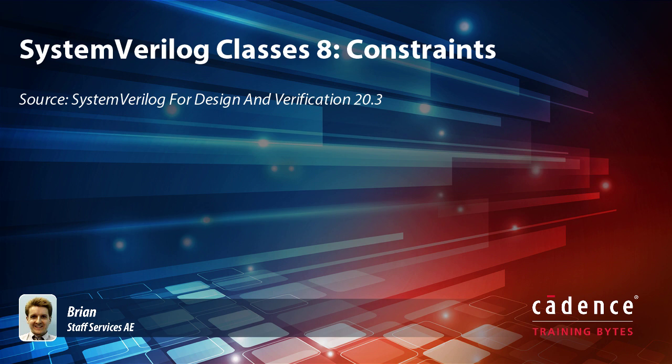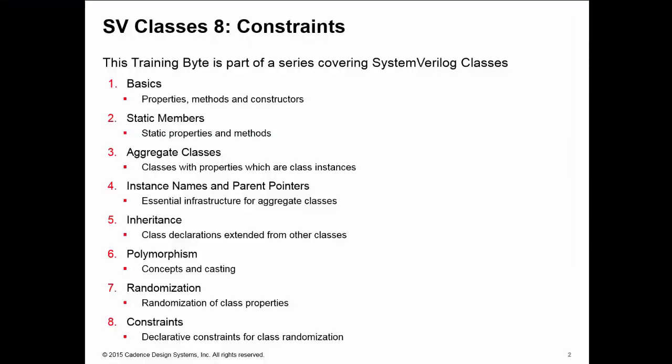Hi, I'm Brian Dickinson, and this training byte is on class constraints in System Verilog. This is the eighth and final training byte in a series showing you how to use classes in System Verilog. In this byte, we're looking at defining constraints for the randomization of class properties.